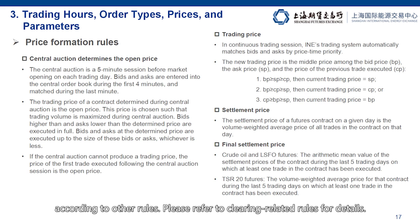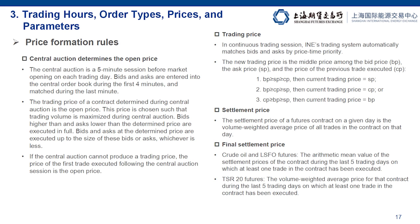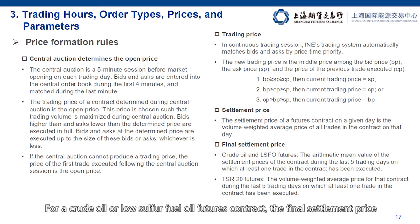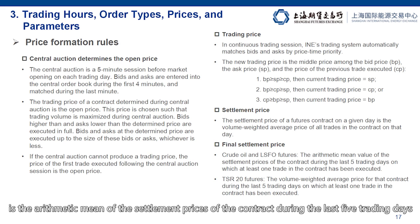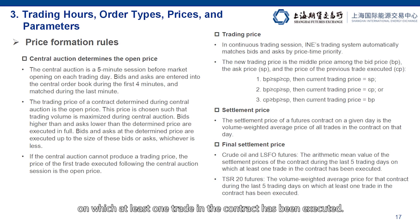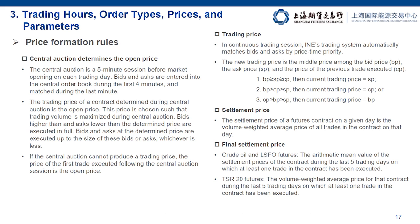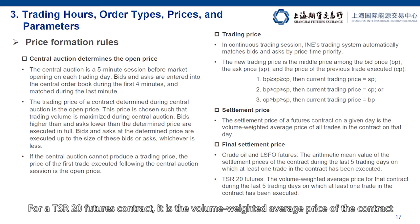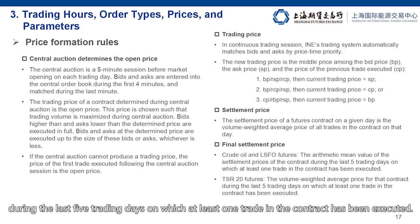If no trade was executed, then the settlement price will be determined according to other rules — please refer to clearing-related rules for details. Lastly, about the final settlement price: for crude oil or low sulfur fuel oil futures contracts, the final settlement price is the arithmetic mean of the settlement prices during the last five trading days on which at least one trade has been executed. For a TSR20 futures contract, it is the volume weighted average price during the last five trading days on which at least one trade has been executed.